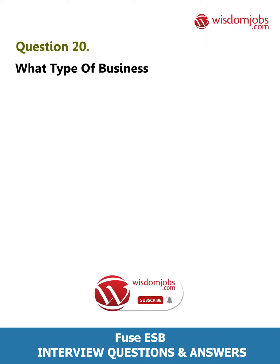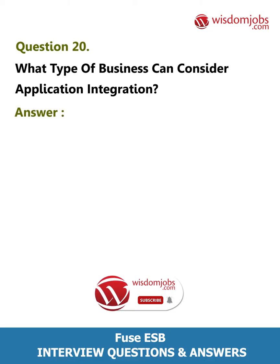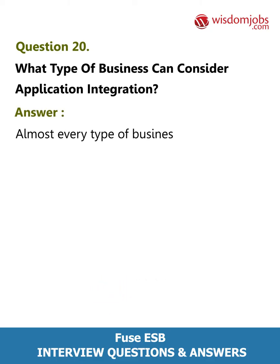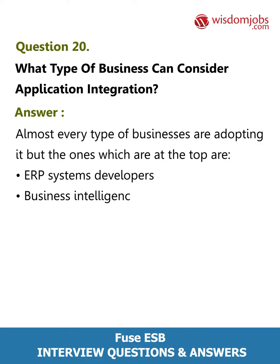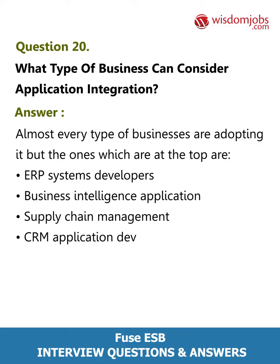One similarity between both these approaches is that they make different applications communicate with each other, but they are totally different. Question 20: What type of business can consider application integration? Answer: Almost every type of business is adopting it, but the top ones are ERP systems developers, business intelligence applications, supply chain management, CRM application developers, and human resource systems.